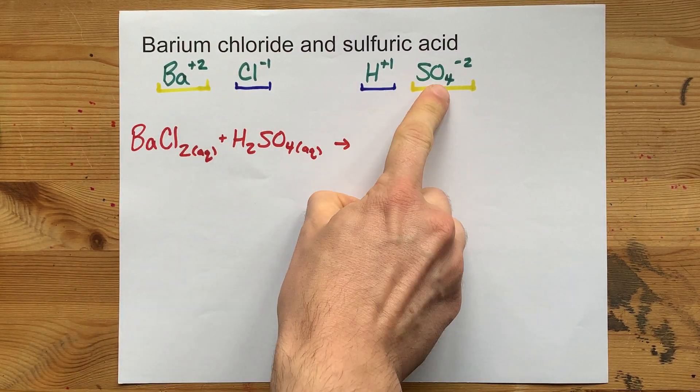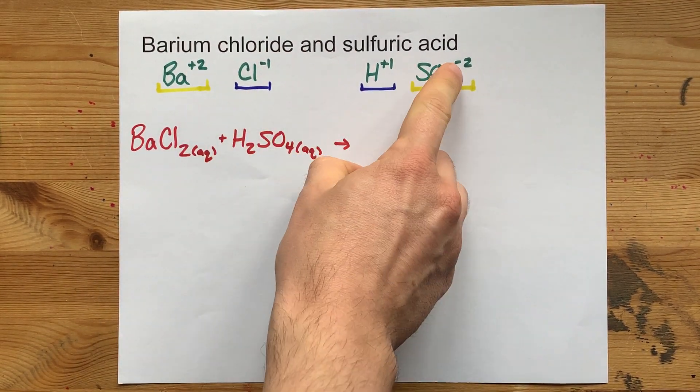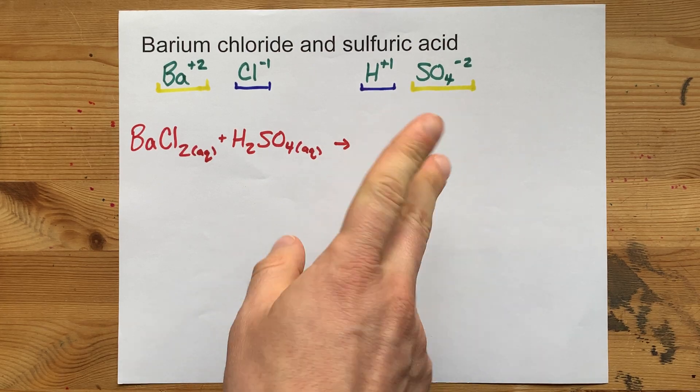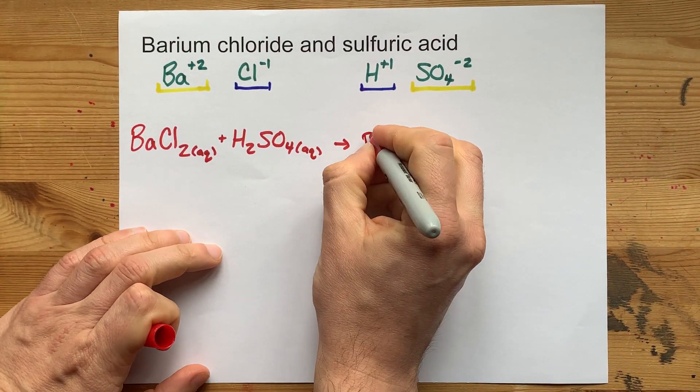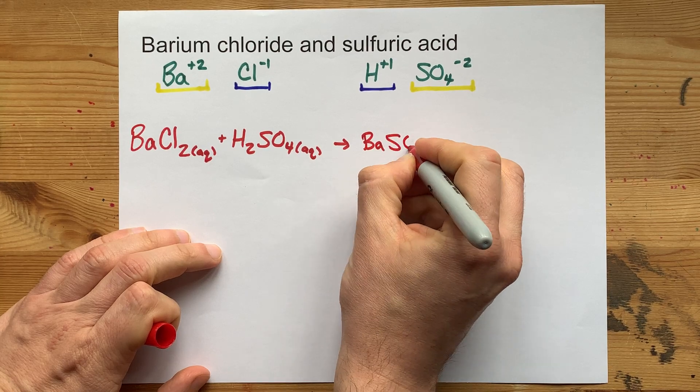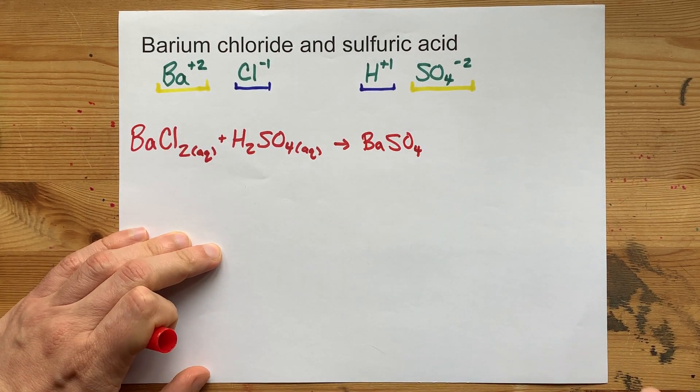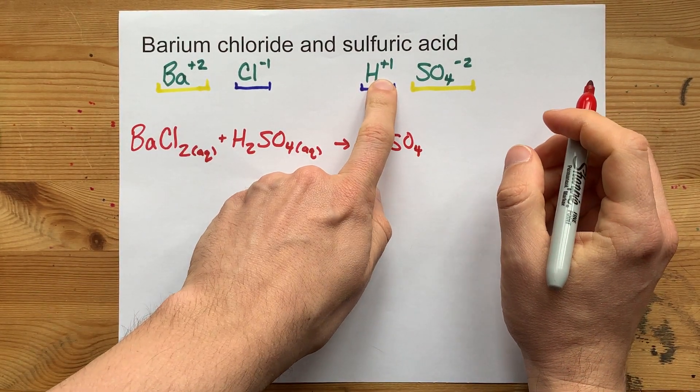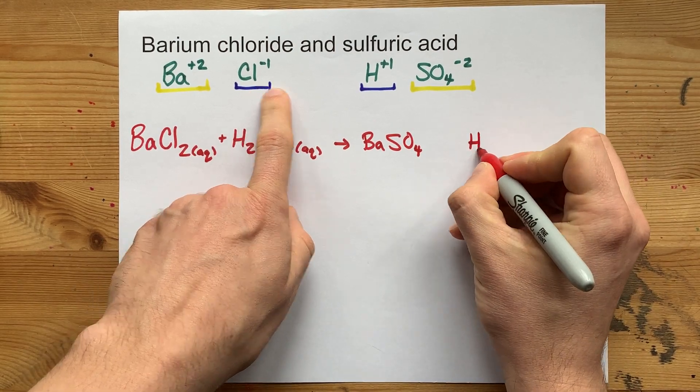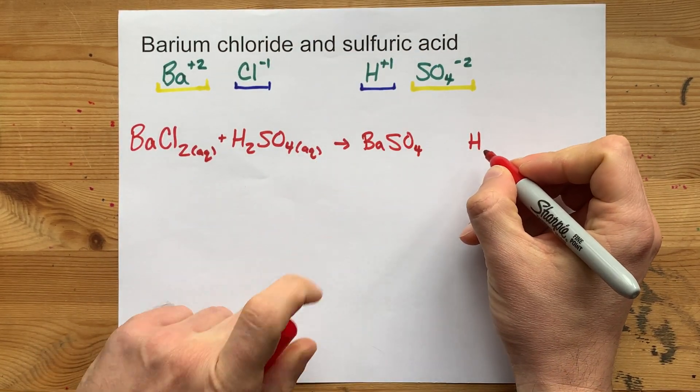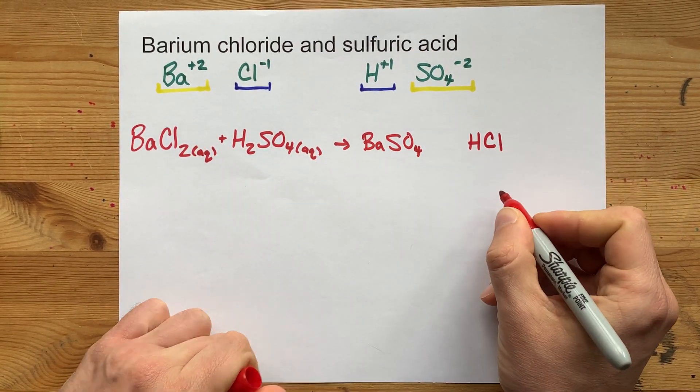Ba with SO₄, positive 2 with minus 2. Those charges cancel each other out. You end up with BaSO₄ or barium sulfate. Putting H with Cl, the plus 1 and minus 1 cancel each other out as well. You get hydrochloric acid.